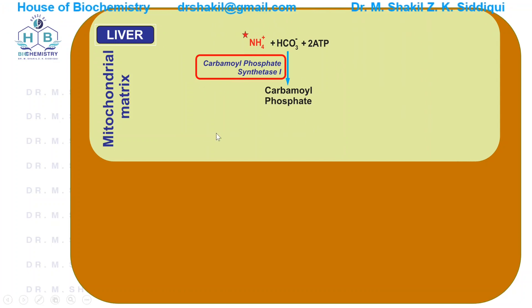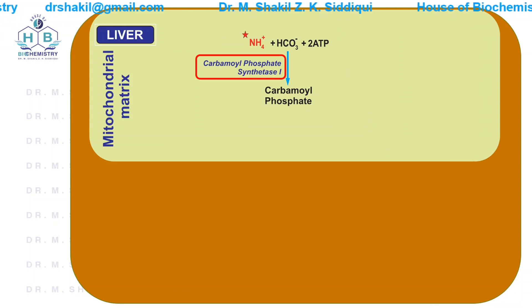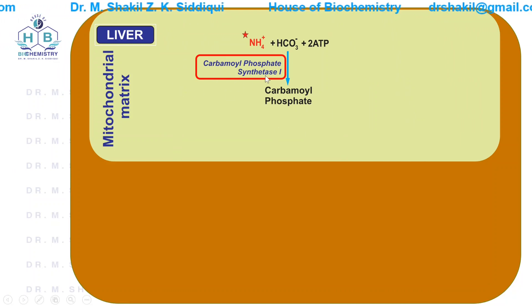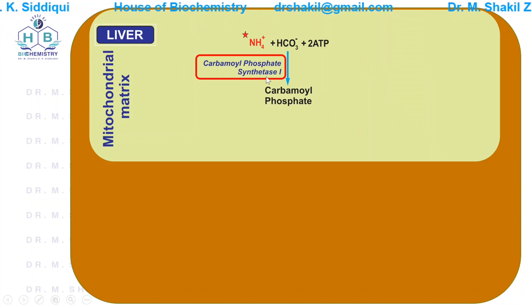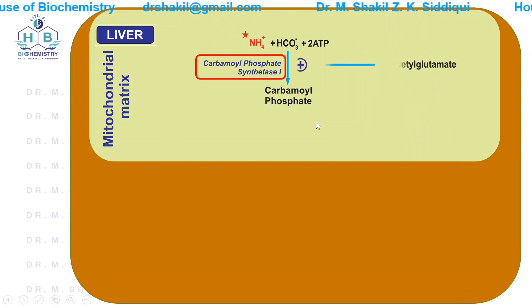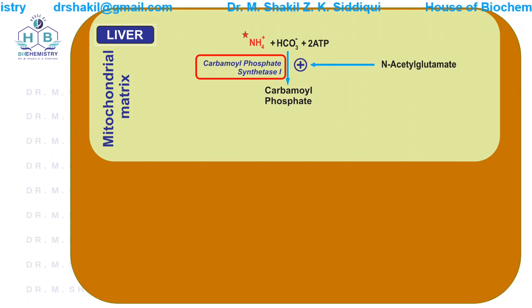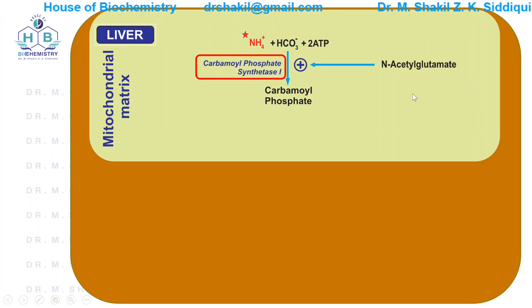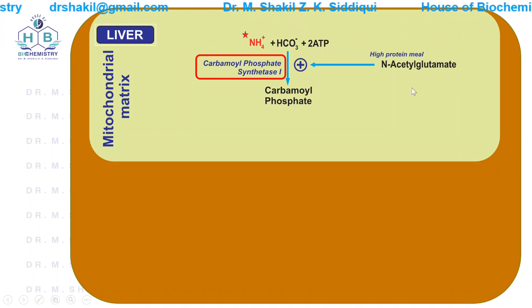CPS1 is a very important and highly regulated enzyme. It is present in the mitochondria of the liver. It is not regulated by hormones but is regulated by a compound known as N-acetyl glutamate. N-acetyl glutamate is produced in response to a high protein meal, because a high protein meal signals the need to dispose of excess nitrogen.